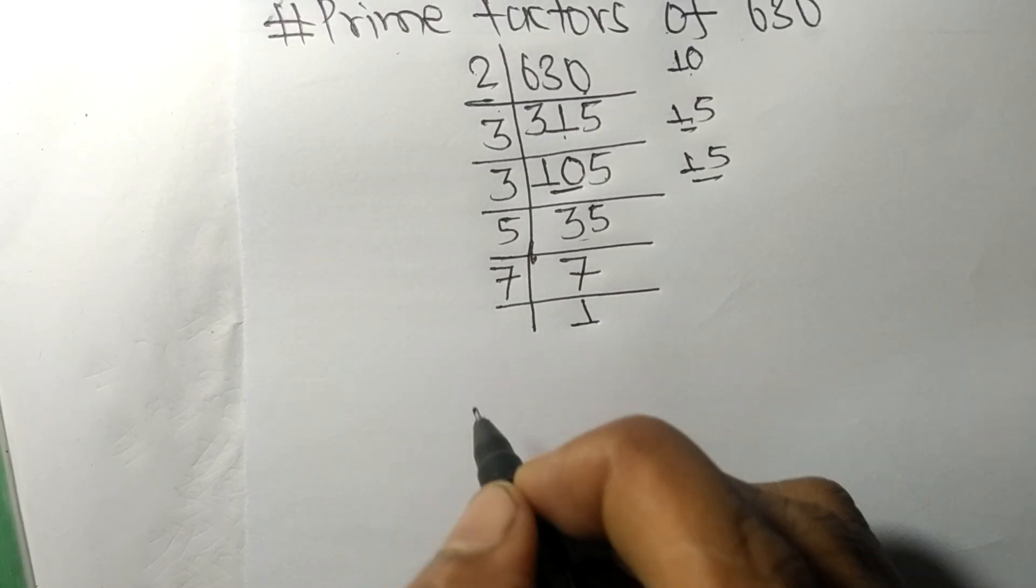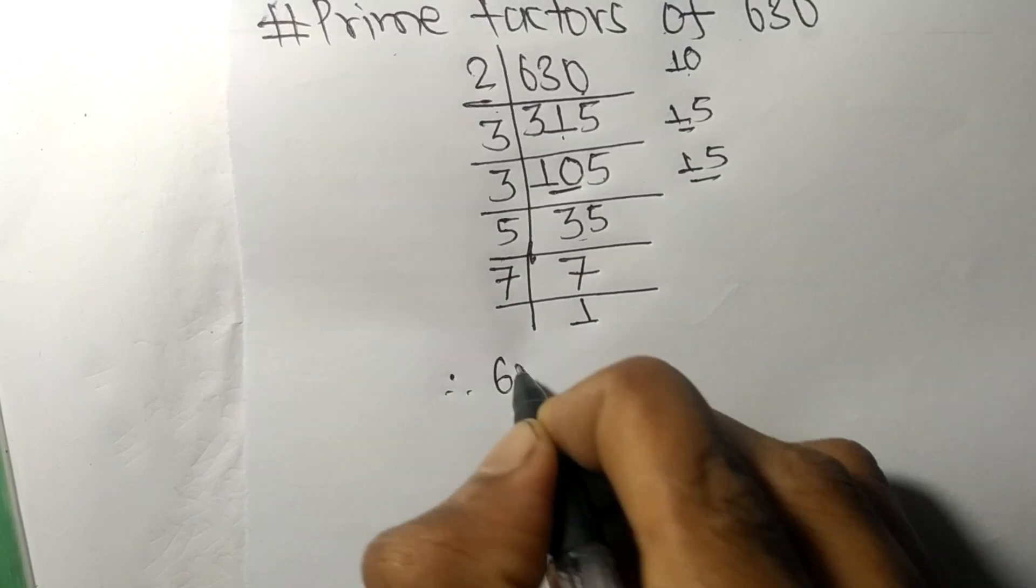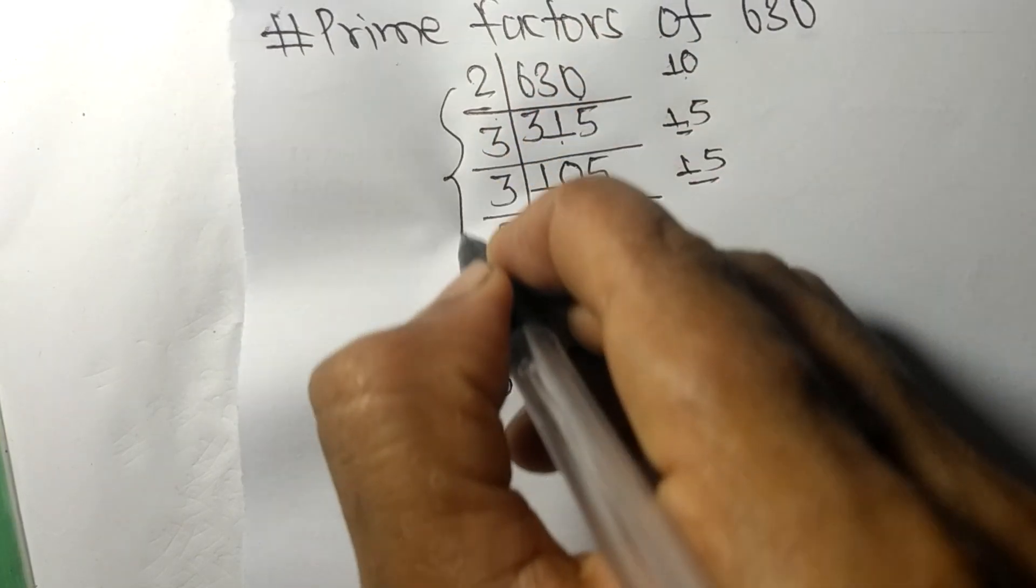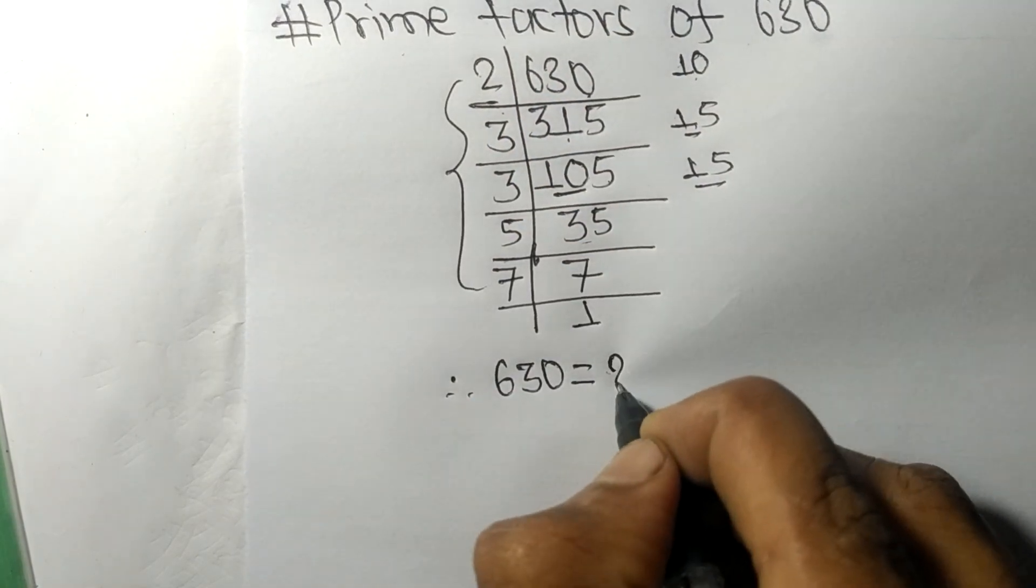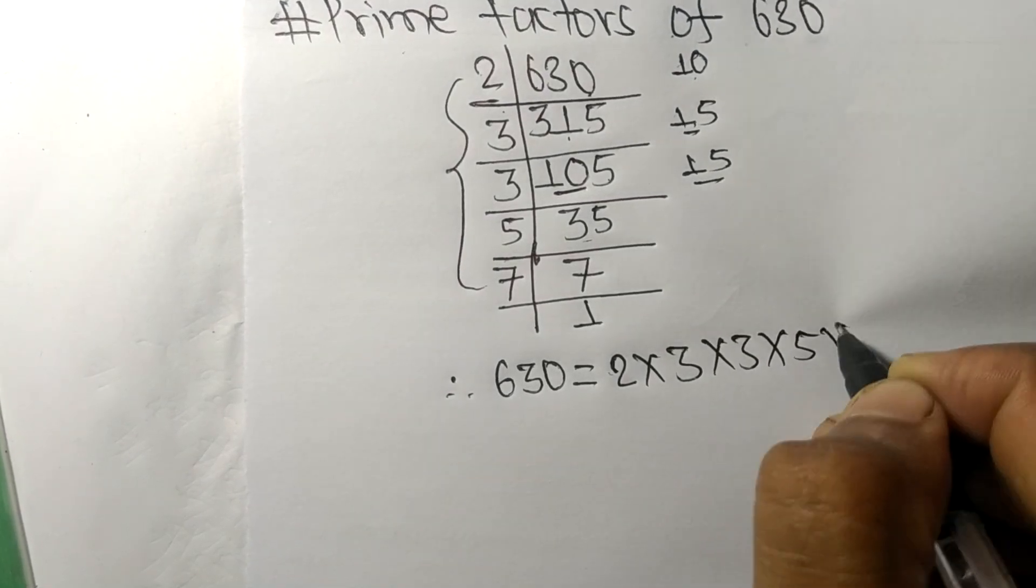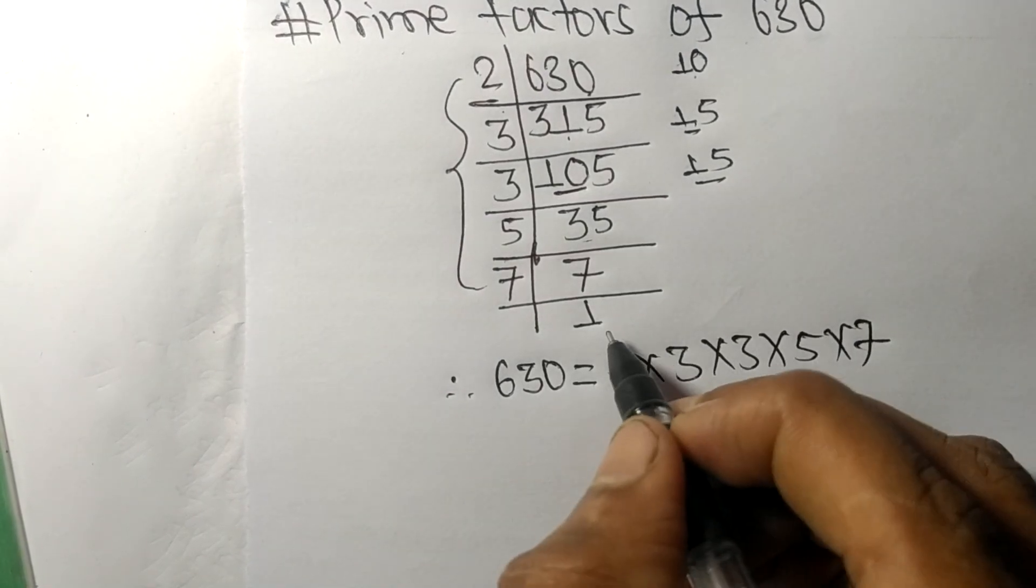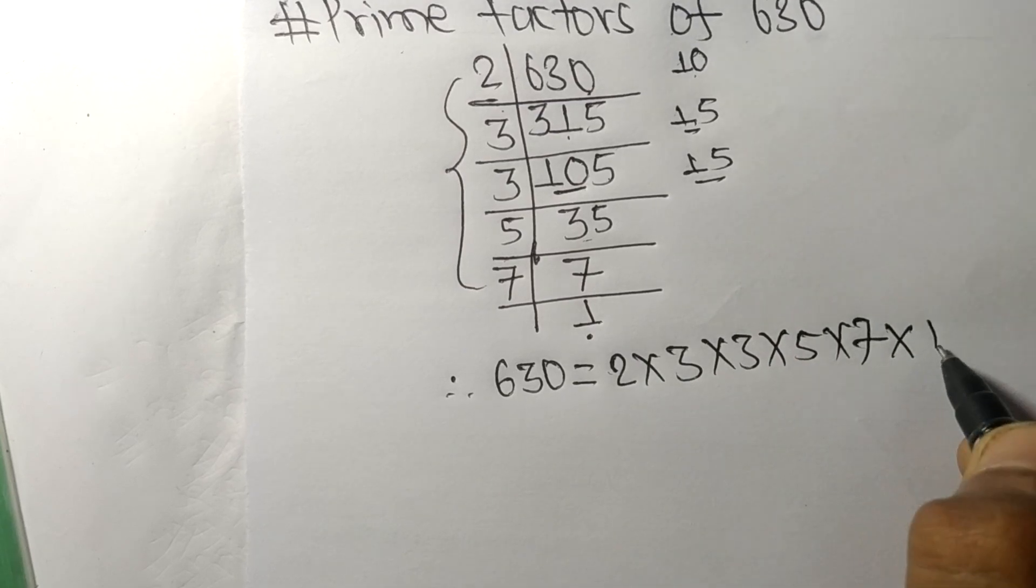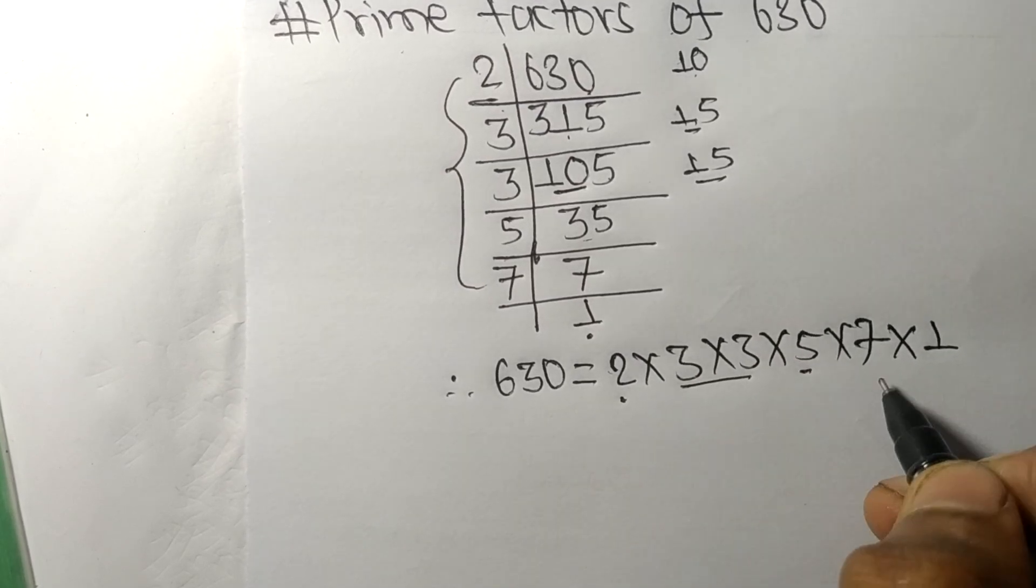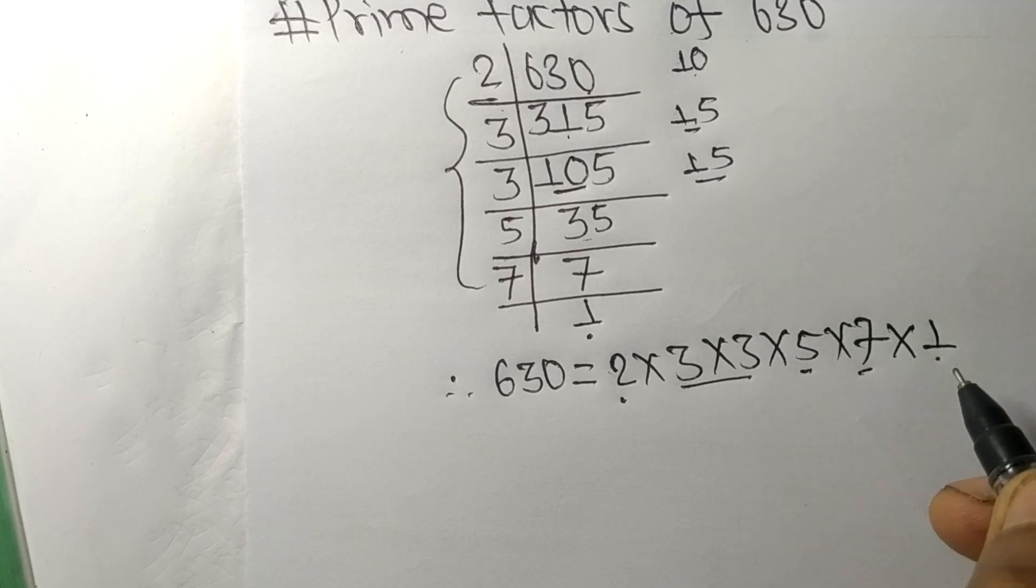Therefore, 630 is equal to: from this side we get 2 times 3 times 3 times 5 times 7, and from here we get 1. So 2, 3, 5, and 7 are the prime factors of 630.